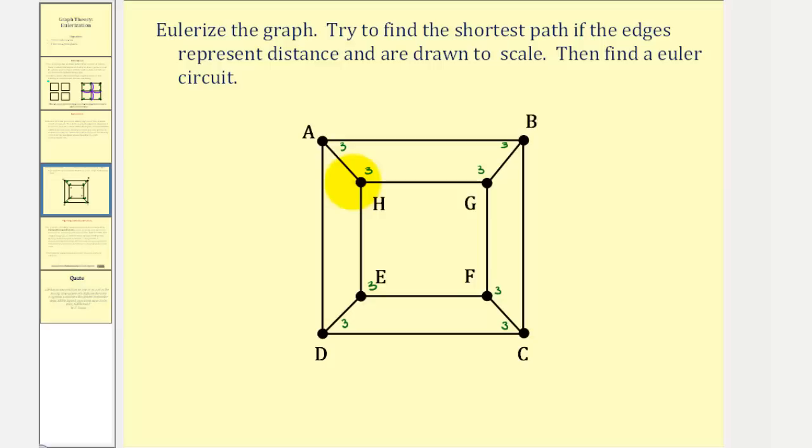We'll duplicate edge AH instead, because it's shorter, it represents the distance, the distance would be less. So we'll duplicate AH here, we'll duplicate BG here, we'll duplicate CF here, and duplicate DE here. Notice by doing this, now each vertex has degree four, which is even. And now we can find an Euler circuit.